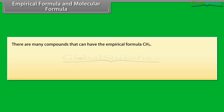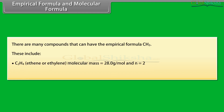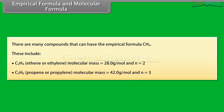There are many compounds with the empirical formula CH₂. These include C₂H₄ (ethene or ethylene, molecular mass 28.0, N=2) and C₃H₆ (propene or propylene, molecular mass 42.0, N=3).